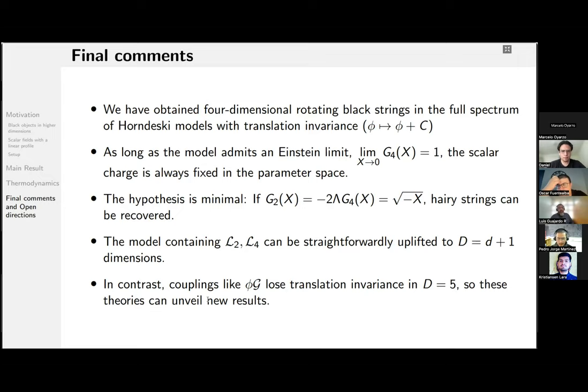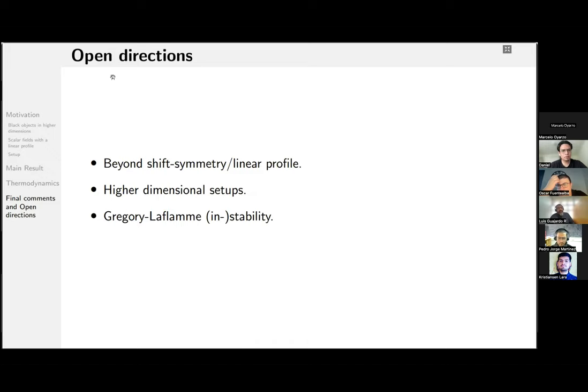in five dimensions, the Gauss-Bonnet density is no longer a topological invariant. So these kinds of couplings lose translation invariance. And these theories can unveil, I hope so, can unveil new results using or not using the linear profile for the scalar. So what's next? Obviously, try to go beyond shift symmetry and try to go beyond the linear profile. It simplifies a bit the model. Obviously, as I just said, the higher dimensional setups for some other couplings. And finally,